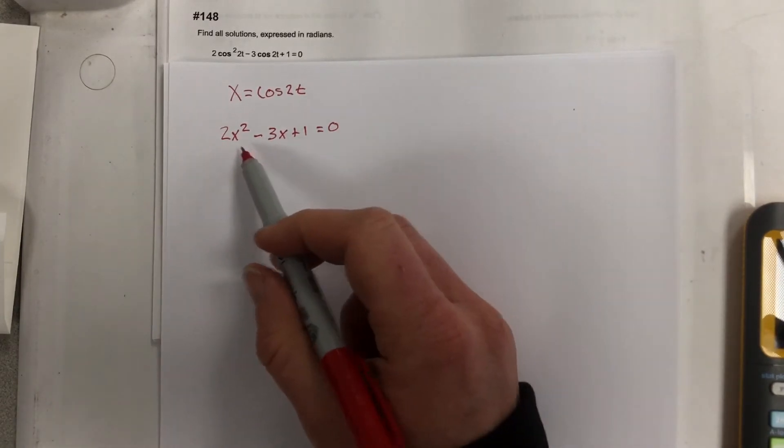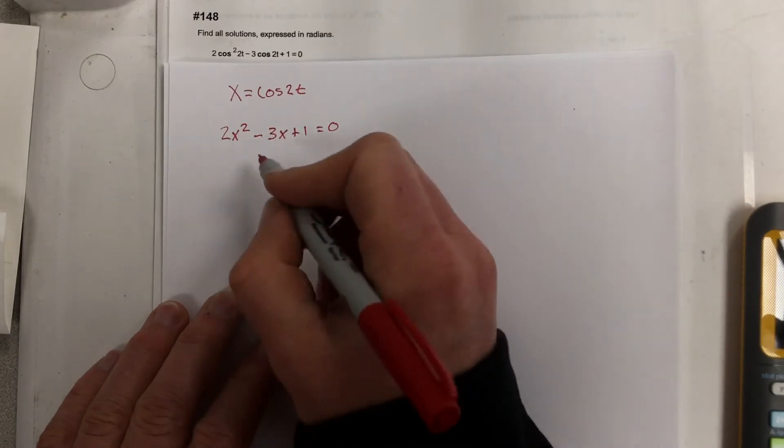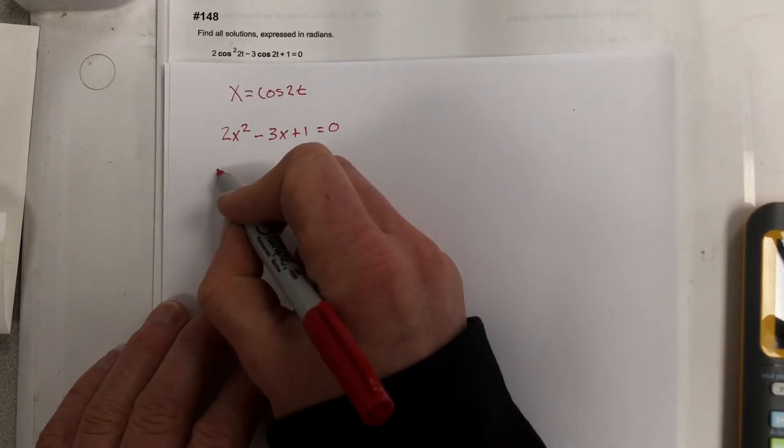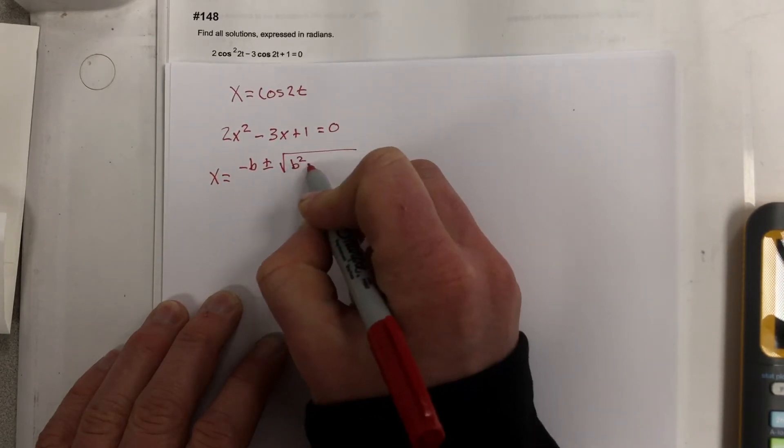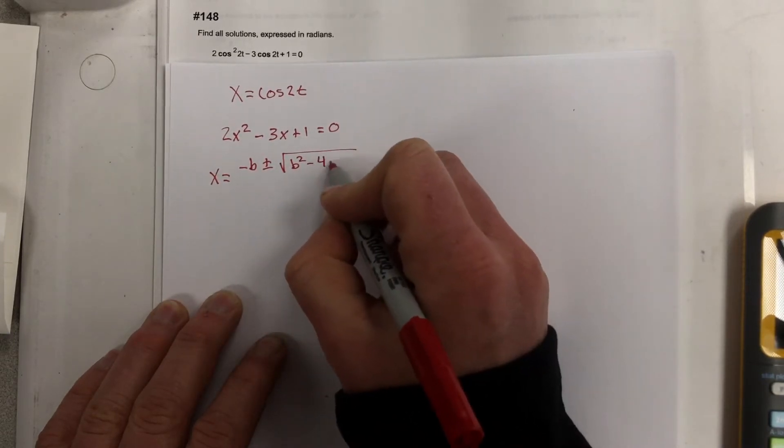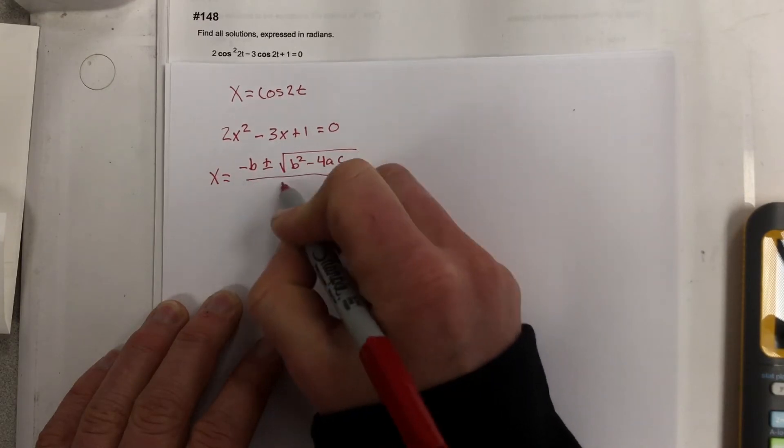I can try to factor this, or I could use the quadratic formula. Let's just use the quadratic formula. So that would be x equals negative b plus and minus root b squared minus 4ac all over 2a.